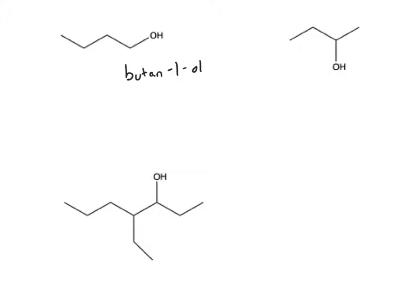In our second example, our main carbon chain is still four carbons long. However, our alcohol is now attached to our second carbon, and therefore our name becomes butan-2-ol.